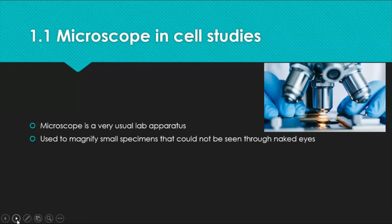A microscope is a very old and very common lab apparatus — every lab must have one. It is very useful for making highly detailed observations of small specimens that are not visible to the naked eye. In simple words, it is used to zoom in on small things. There are two types: light microscope and electron microscope, which we'll deal with later in this video.